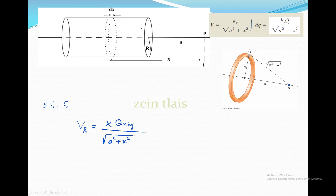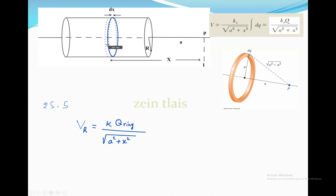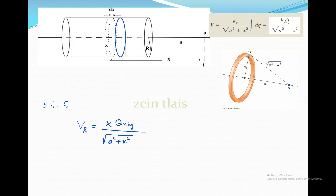The cylinder is a collection of many rings. In order to calculate the total electric potential of this cylinder, I have to integrate the electric potential created by a ring along the length of the cylinder — the summation of many rings gives us the total cylinder.